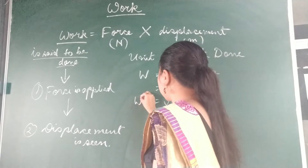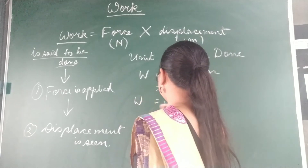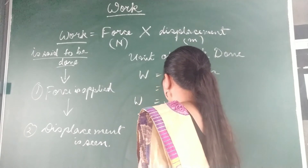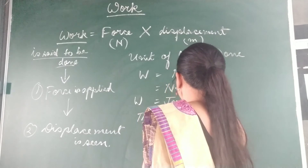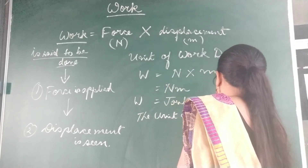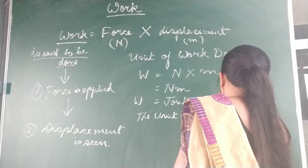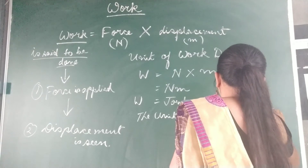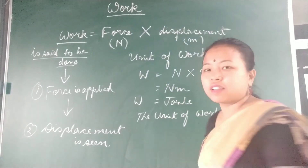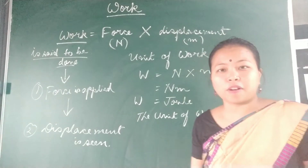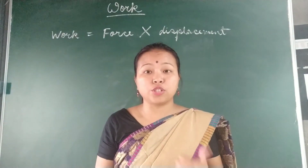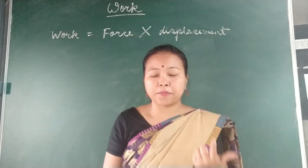The unit of work done is Joule, also denoted by capital J. I hope you understood this. Now, how will you define one Joule of work done?